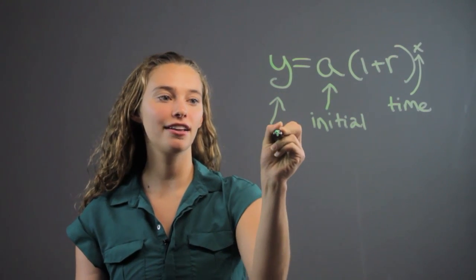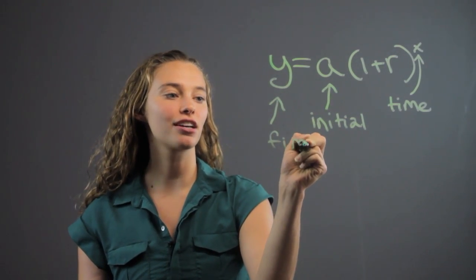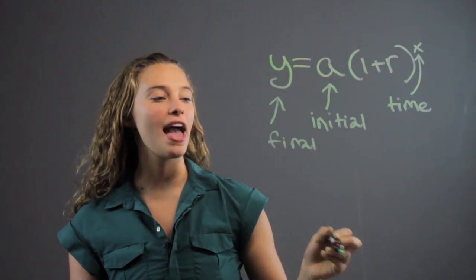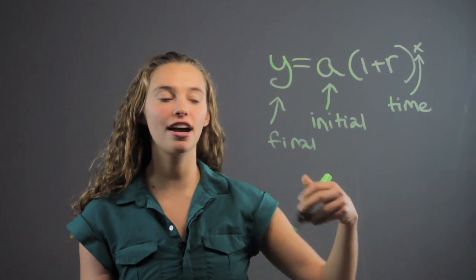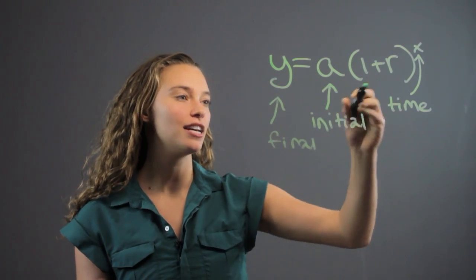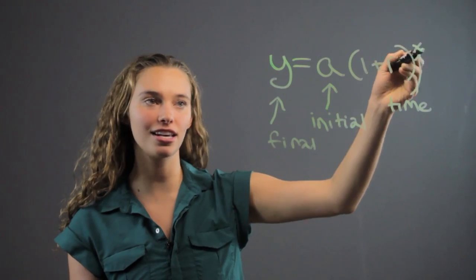And y is the final amount after the growth has taken place. And you can graph this. We have the x and the y. We can graph this on a graph and it's going to be some sort of curve because we have the exponent here.